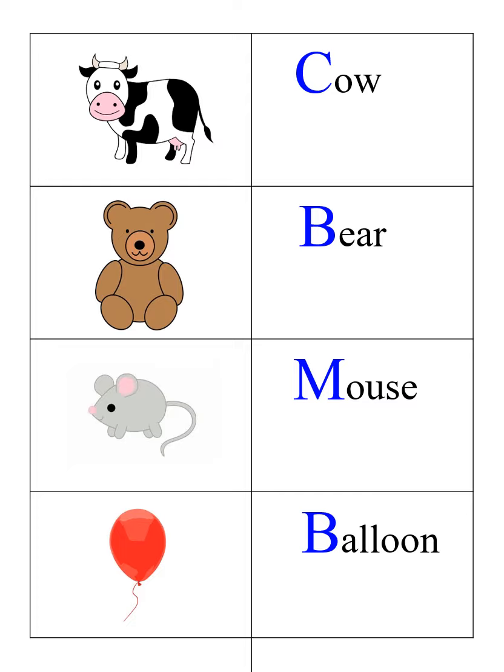To begin with, we have four vocabulary words. Cow, c-c-cow, bear, b-b-bear, mouse, m-m-mouse, balloon, b-b-loon.